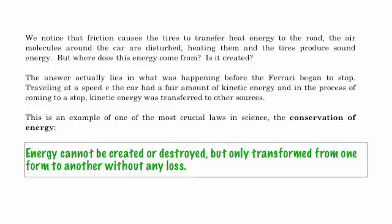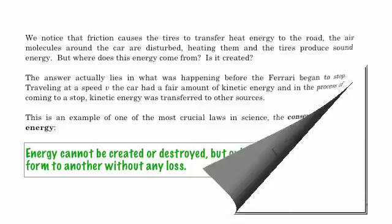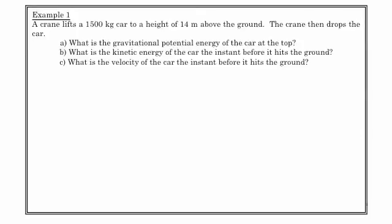Let's think about a very straightforward example. A crane lifts a 1500 kilogram car to a height of 14 meters above the ground, and then it drops the car. Let's think about a whole bunch of different moments in this experiment. Let's calculate what the gravitational potential energy of the car is at the top. When that car has been lifted to 14 meters, how much gravitational potential energy does it have?